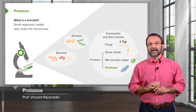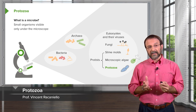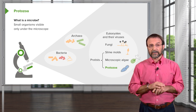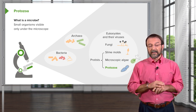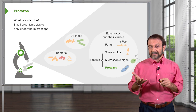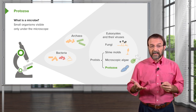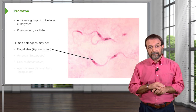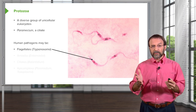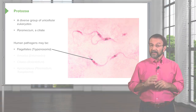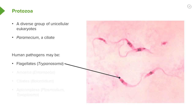That brings us to the other kinds of eukaryotic microbes. There are several that we won't touch upon. There are slime molds, for example, which are considered microbes. There are microscopic algae, and then there are protozoa. Collectively we call these last three protists, and I want to focus on the protozoa. The protozoa are a diverse group of unicellular eukaryotes — they consist of just one cell — and a very famous one is the paramecium, which is a protozoan with cilia on it.